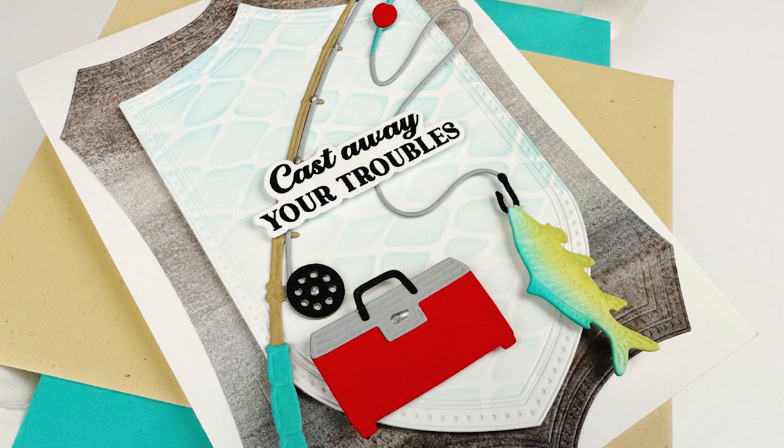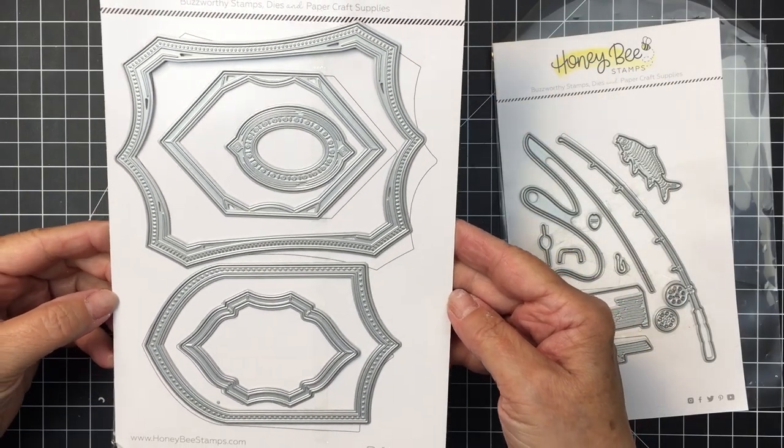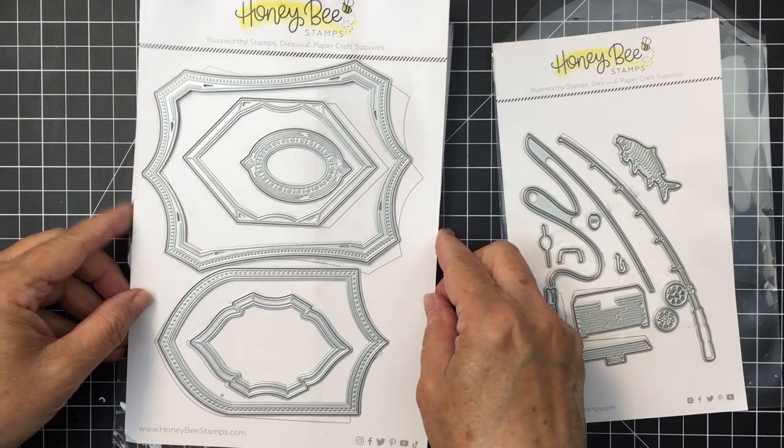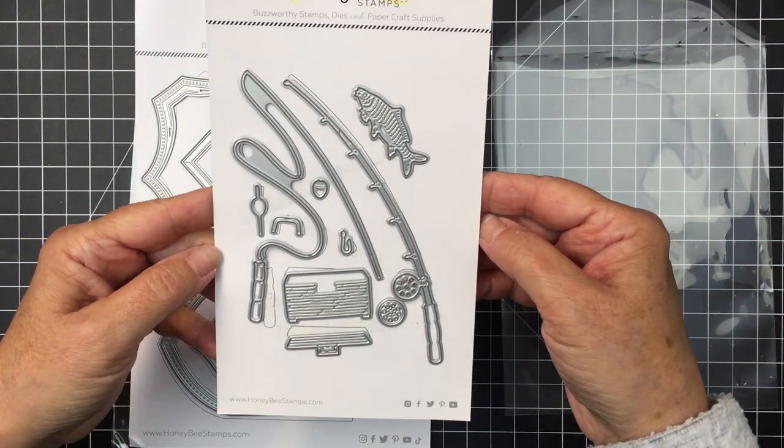Hello everyone, it's Mari here for Honey Bee Stamps. I'm going to be creating a clean and simple card for you today using the Shield Layering Frames die set. I'm also going to be using the Lovely Layers Rod and Reel die set that's so cute.